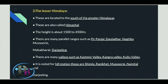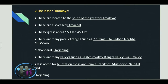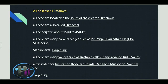The second range is the Lesser Himalaya, located south of the Greater Himalaya. It is also called Himachal. Many parallel ranges are found here: Pir Panjal, Dhauladhar, Mussoorie, Darjeeling, and Mahabharat ranges.